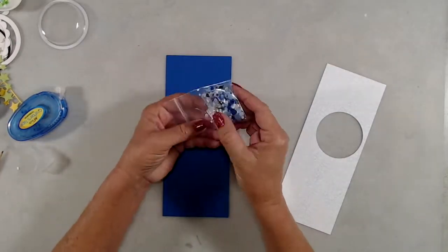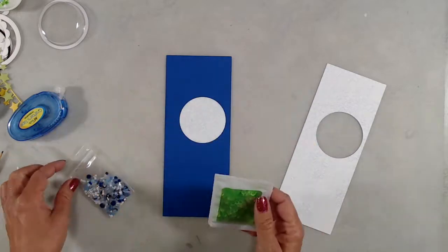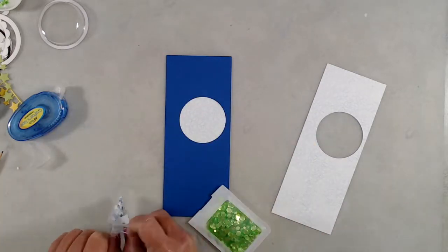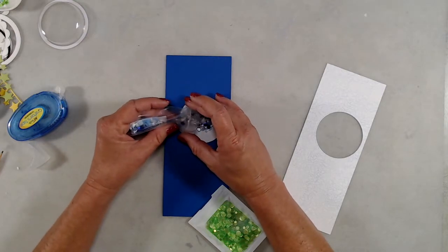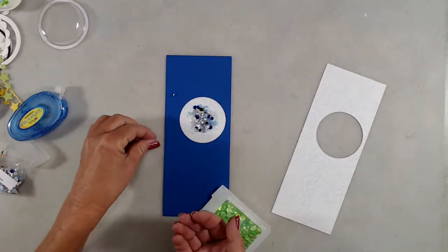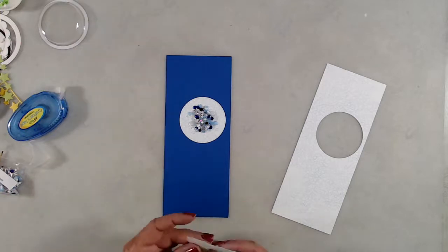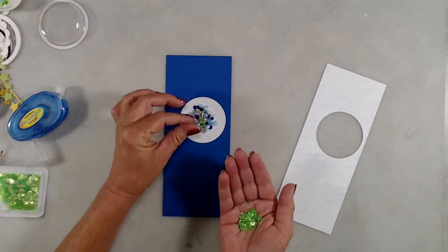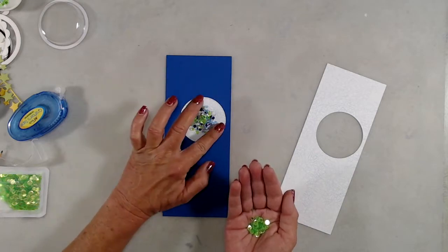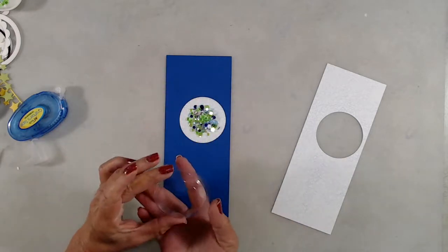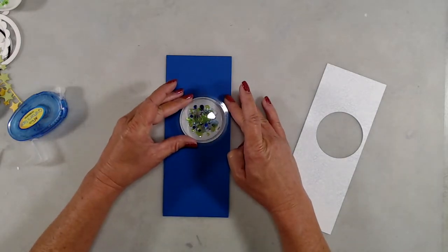For the confetti mixes that I used for this card, I used the Whimsy Mix, which is primarily blue, white, and silver. Since I colored my little monster green and blue, I wanted to add in some green confetti as well, so I used the Glazed Lime confetti pieces and just sprinkled a few in with the Whimsy Mix. Next, I removed the release paper from my bobble bubble and adhered that right over the circle with my sequin mixes.